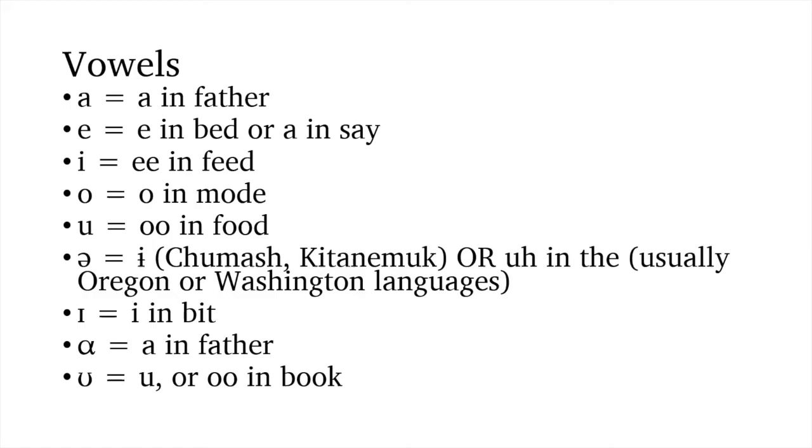So, on to look at the vowels. Basically, most of the time it's straightforward. A, E, I, O, U. So, A is in father. E is in bed or say. I is E. O is O. U is U. So, A, E, I, O, U. First five. You can kind of take that's what it will always sound like. Now, some are ambiguous.